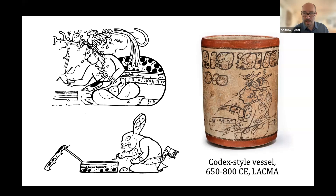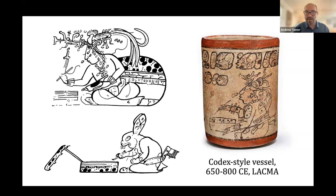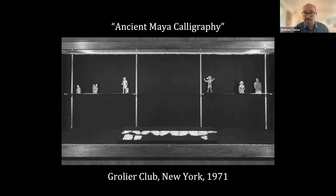Unfortunately, nothing really survives from this period in terms of actual codices, though we do have ample evidence of people shown as scribes painting books and holding them in courts. With the three well-known examples, virtually everything that was known about Maya hieroglyphic writing, Maya astronomy, Maya mathematics, and Maya deities — up until the 1970s — came from study of those three books, especially the Codex Dresden. These books were considered extremely important and extremely rare.